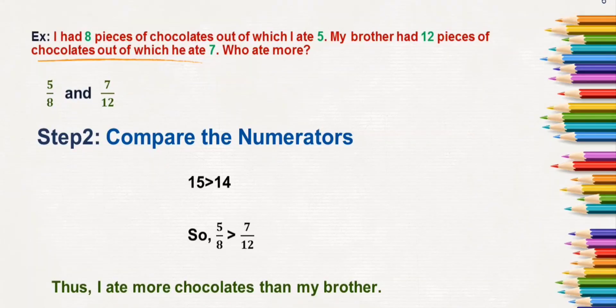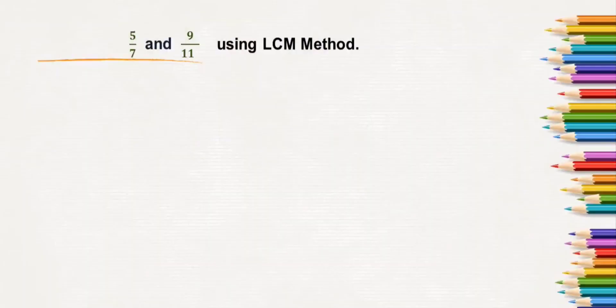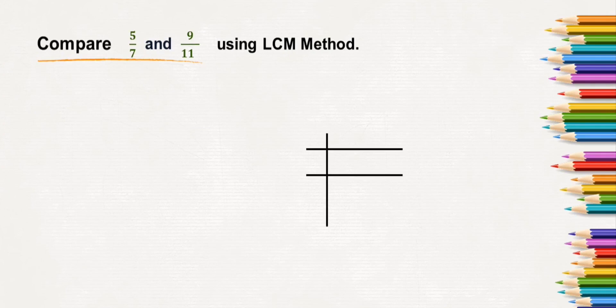Let's look at another example. Compare 5/7 and 9/11 using the LCM method. Here, 5/7 and 9/11 have both different denominators and different numerators. Since the denominators are different, we'll have to take the LCM of 7 and 11.